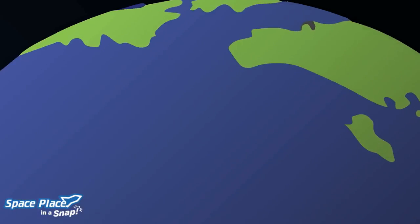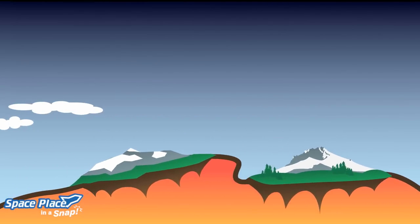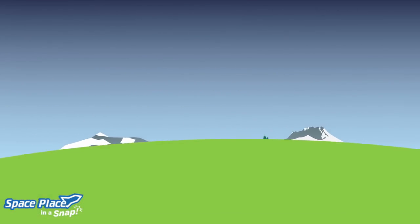Despite its rock-solid appearance, Earth's surface is constantly shifting and drifting. That's thanks to something called plate tectonics.